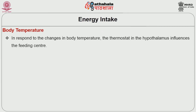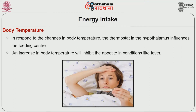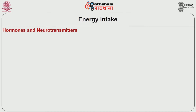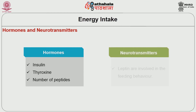Body temperature: in response to changes in body temperature, the thermostat in the hypothalamus influences the feeding center. An increase in body temperature will inhibit the appetite, as in conditions like fever. Hormones and neurotransmitters: hormones like insulin, thyroxin, and a number of peptides, and neurotransmitters like leptin, are involved in feeding behavior.